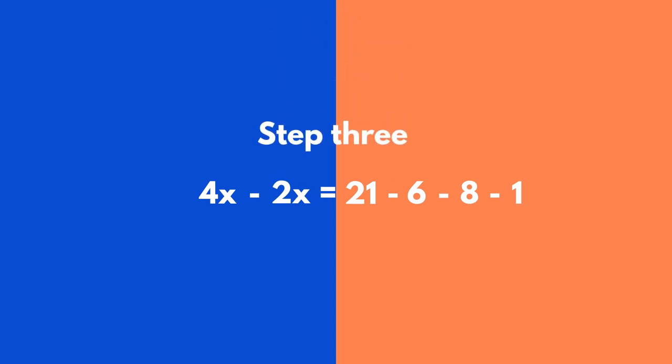Step 3: do the adding and/or subtracting in each side of the equation. Step 4: divide both sides of the equation by the parameter of x - in our example, with the number 2.